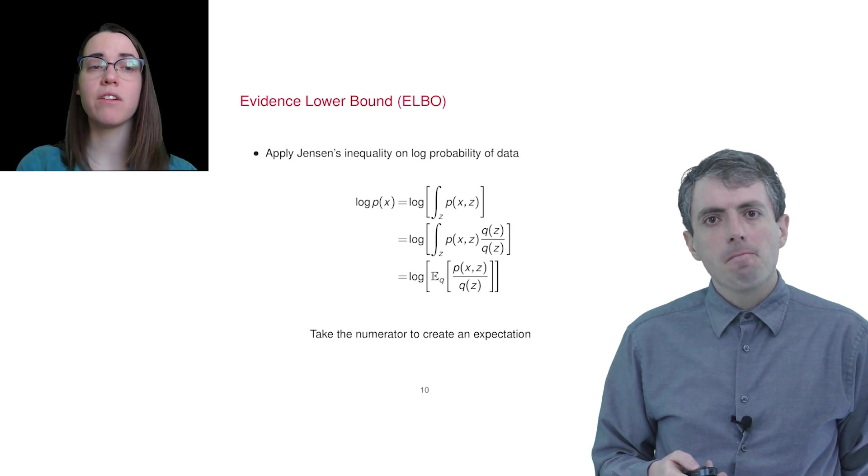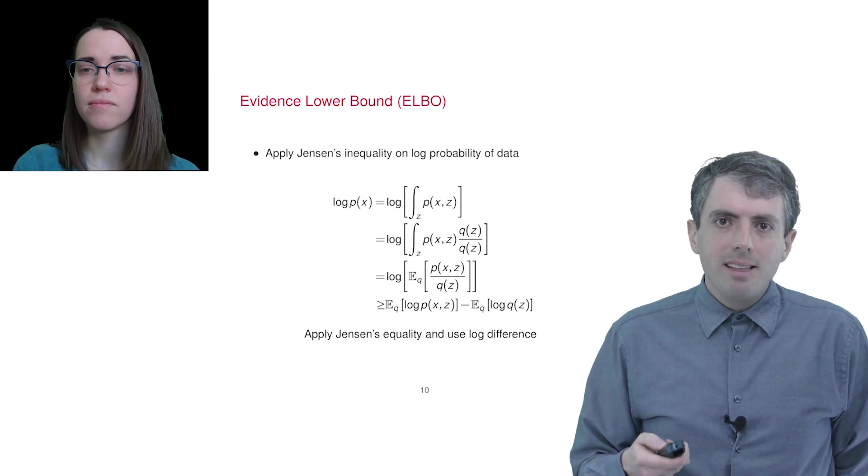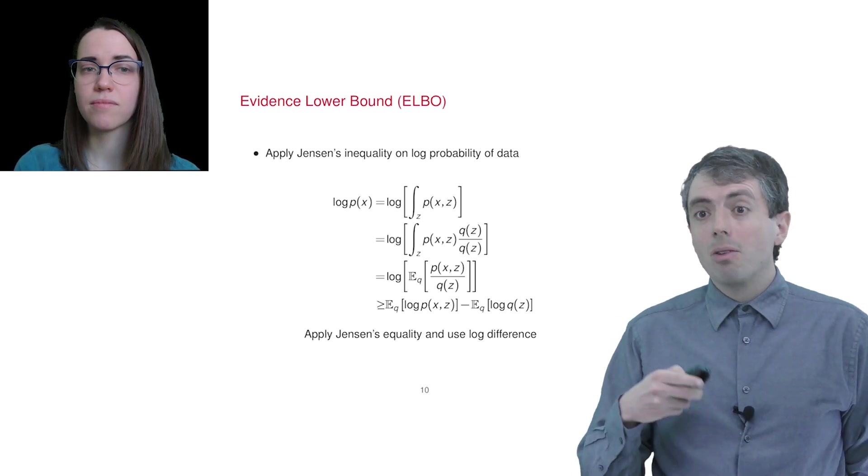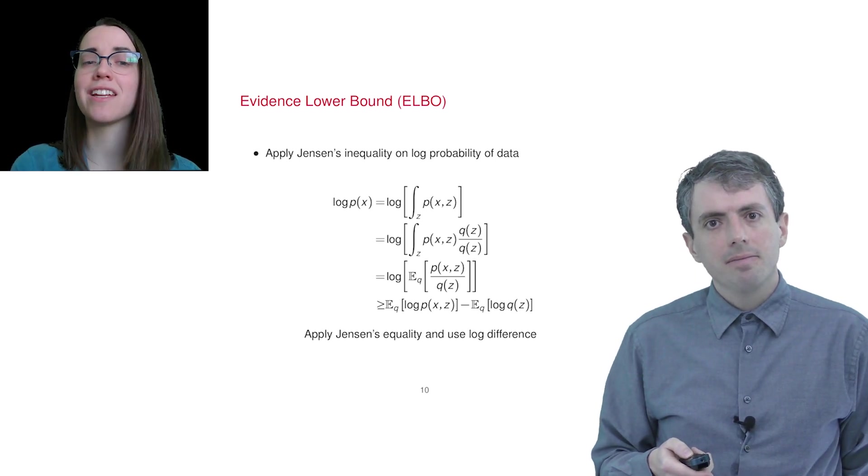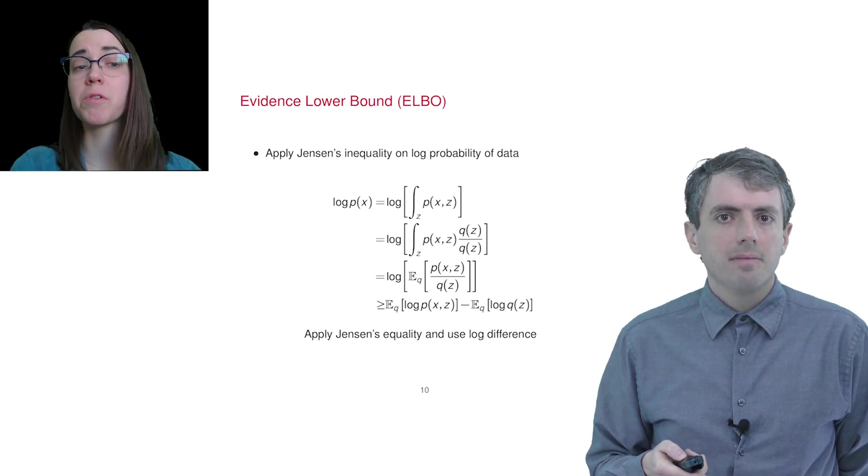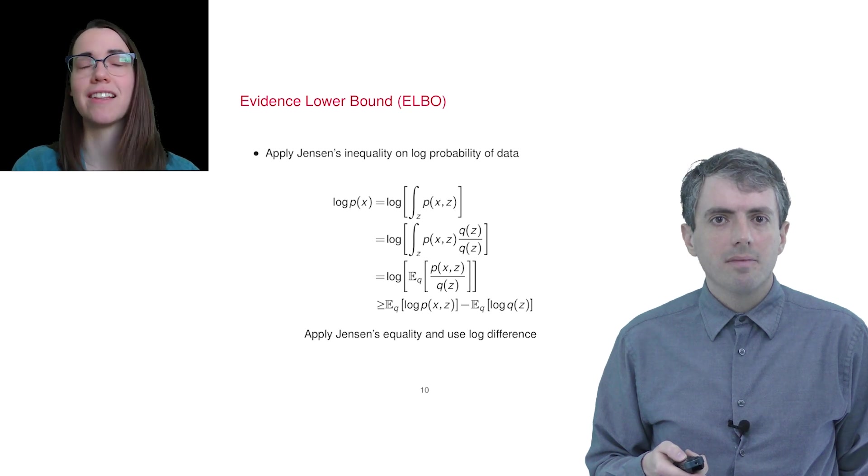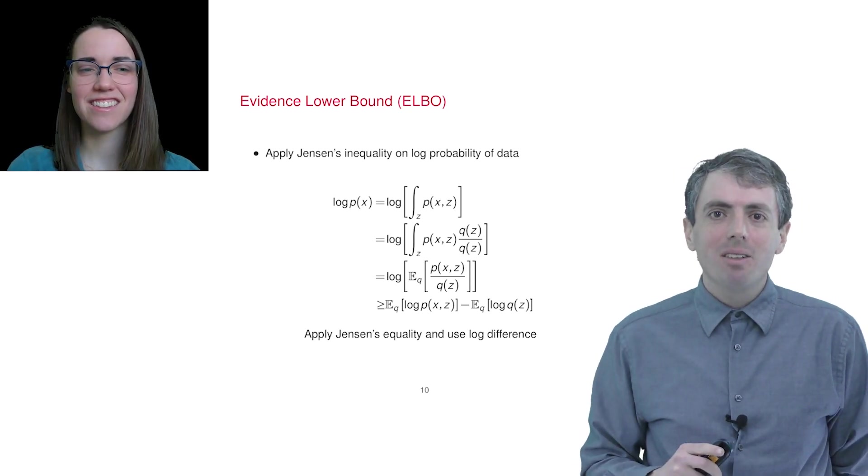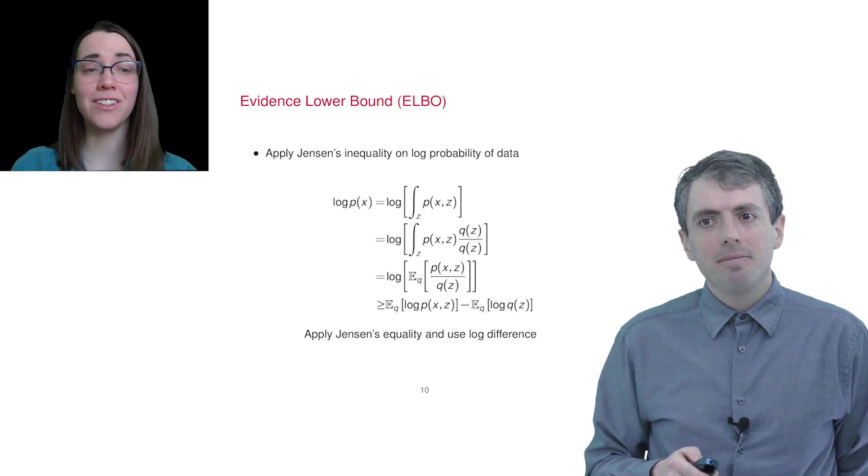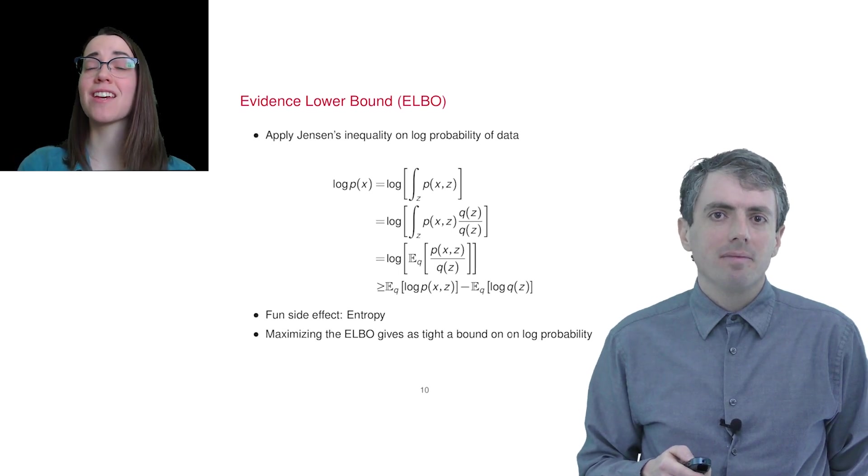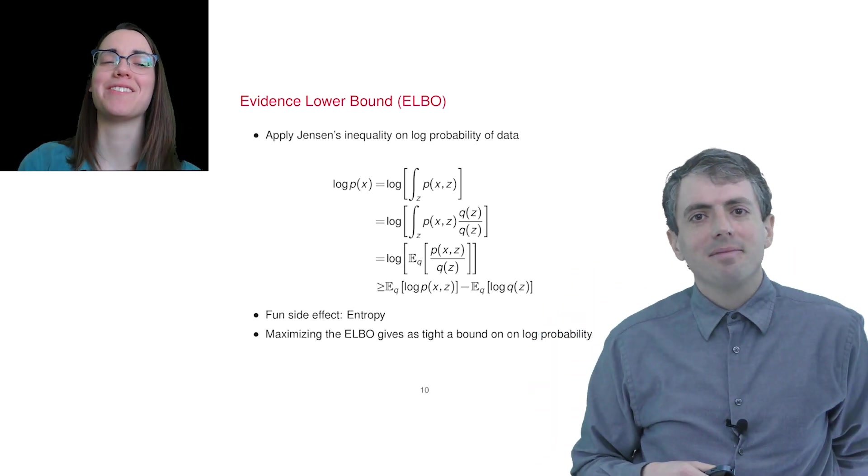And then after that, we'll flip the expectation and the log using Jensen's inequality. That also causes the equal sign to turn into a greater than sign. And then we break the log into two parts using the linearity of expectation and that the logarithm of quotient is the difference of the logarithm of the numerator and the logarithm of the denominator. Gosh, I love logs. But that denominator looks familiar. Isn't that just the entropy of the variational distribution? You got it. And this whole objective is called the evidence lower bound, or ELBO for short. This is a lower bound of the log probability. Yep.